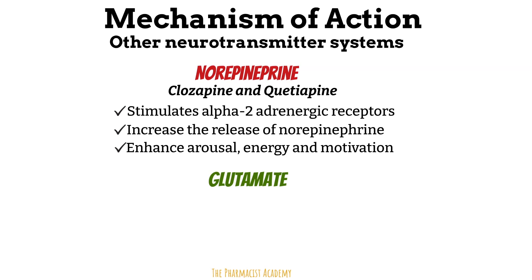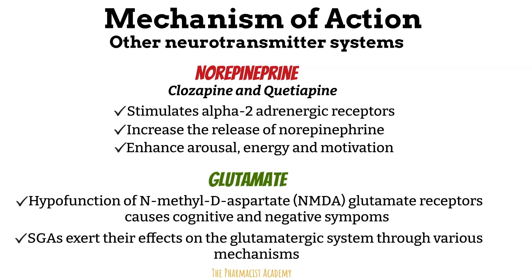Clozapine and quetiapine stimulate alpha-2 adrenergic receptors, leading to an increase in the release of norepinephrine, which results in enhanced arousal, energy, and motivation. Glutamate is the main excitatory neurotransmitter in the brain and plays a central role in cognition and neuronal communication. There has been growing evidence about glutamate and its involvement in the pathophysiology of schizophrenia, described in the glutamate hypothesis of schizophrenia. Second generation antipsychotics exert effects on the glutamate system through various mechanisms that help correct cognitive and negative symptoms. So it's apparent that second generation antipsychotics are efficacious for both the positive and negative symptoms of psychosis.